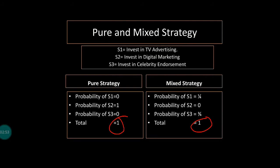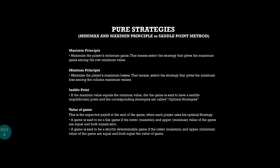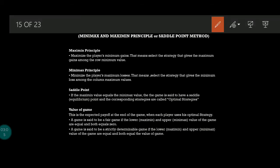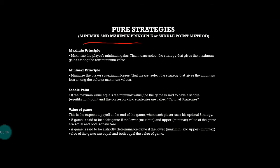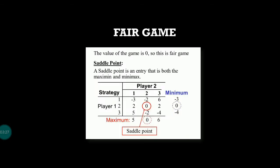In pure strategy we now focus on the minimax and maximin method, also called the saddle point method. Minimax and maximin is one principle, and saddle point is another name for the same principle. In the maximin principle, you maximize the player's minimum gains — that means you select the strategy that gives the maximum gain among the row minimum values.